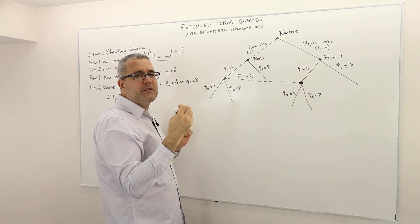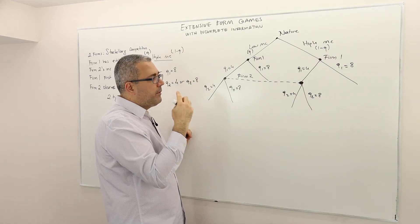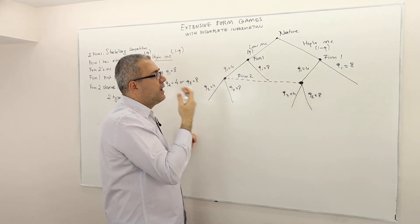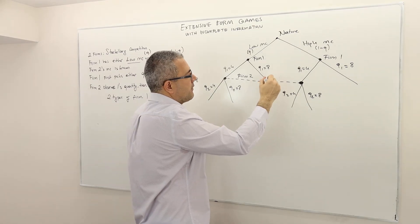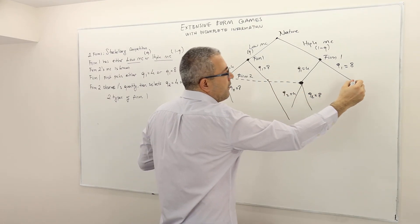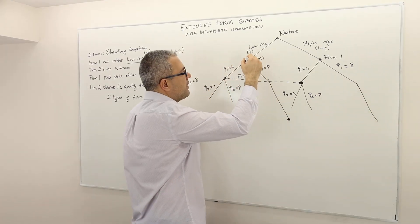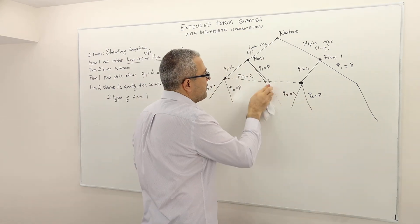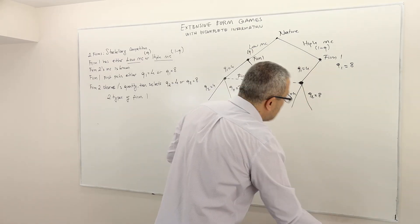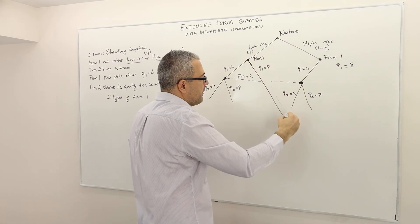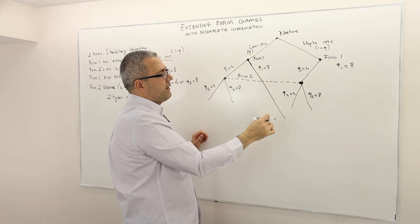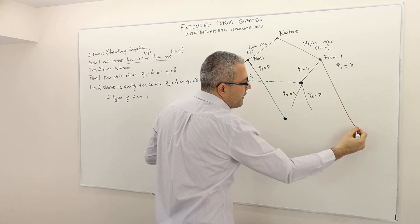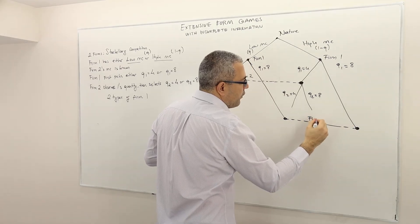That is the piece of information firm 2 cannot really pin down. So how am I going to do that? Well similarly this decision node and this decision node must be in the same info set. Well in order to get rid of this overlapping information sets, let me just extend this branch. I'm sorry for double branches here. So let me make it nicer and this one as well. So this is longer than the other one so that the information sets do not overlap. There is no other reason.